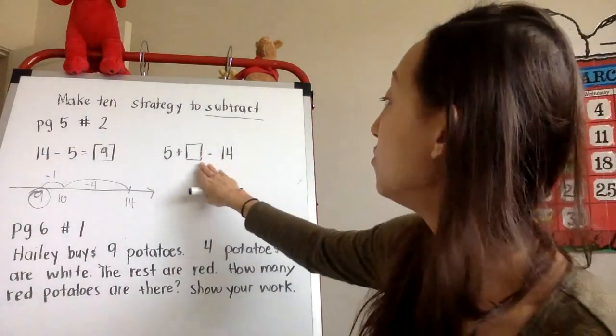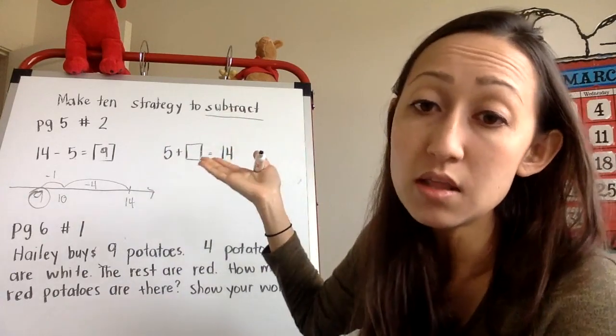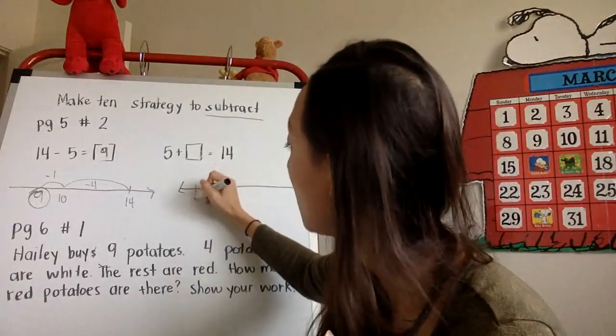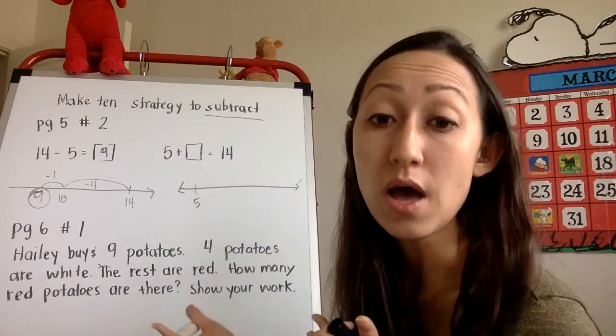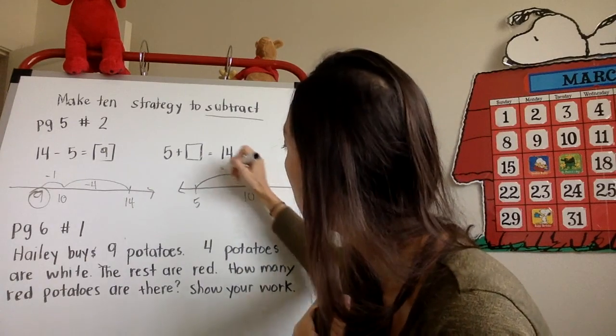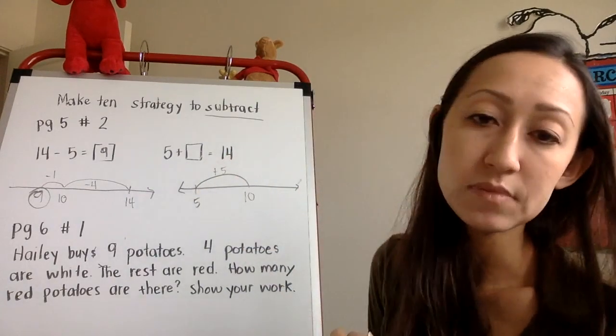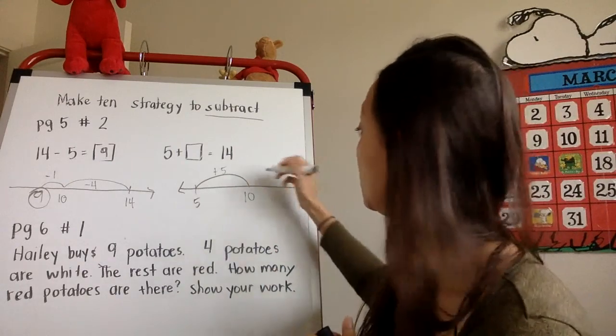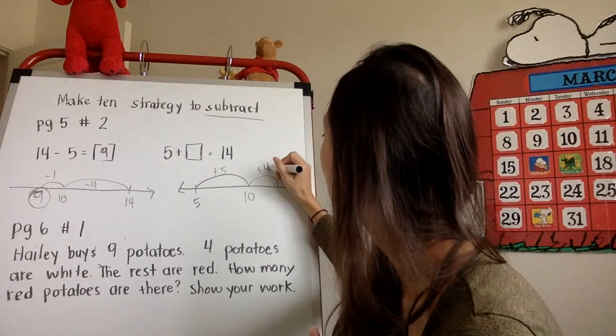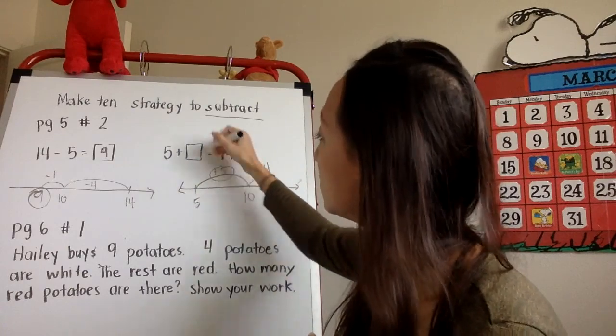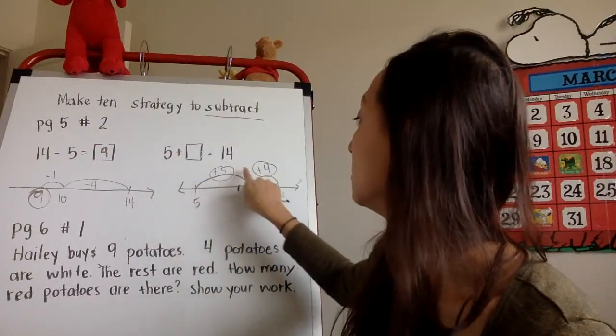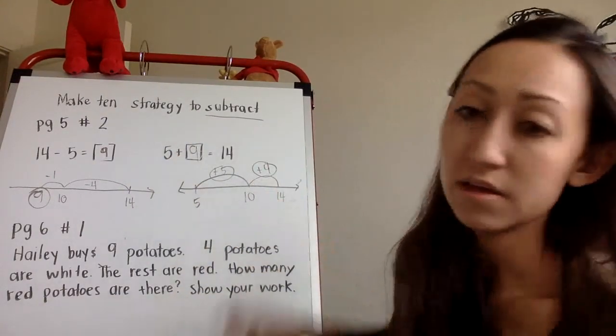And then similarly for this one here, five plus what gives you 14. So you're going to use the make 10 strategy, but this is an addition problem. So you're going to start at five down here. Now, five plus what gives me 10? That's pretty easy, five plus five. So I'm going to stop at 10. So that becomes plus five. I'm not done with my problem, I still have to get to 14. So how much more is it going to take? It's going to take four. Very good. And so because it's addition, you're solving for a part. Your answer is in the jumps. So five plus nine gets me to 14.